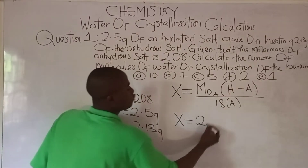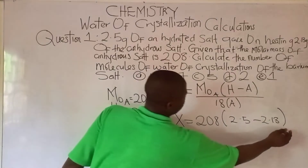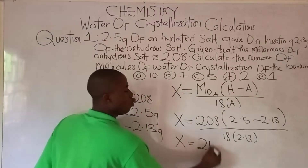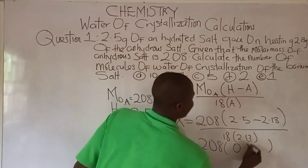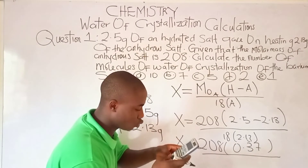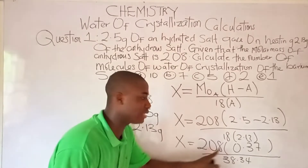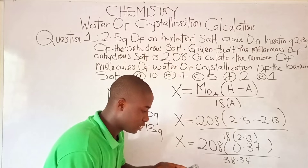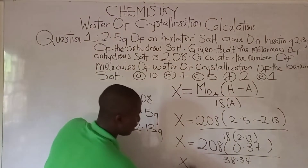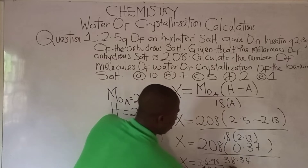Let's input the parameters. X = 208 × (2.5 − 2.13) / (18 × 2.13). So X = 208 × 0.37 / (18 × 2.13). Now, 18 × 2.13 = 38.34, and 208 × 0.37 = 76.96. So X = 76.96 / 38.34.